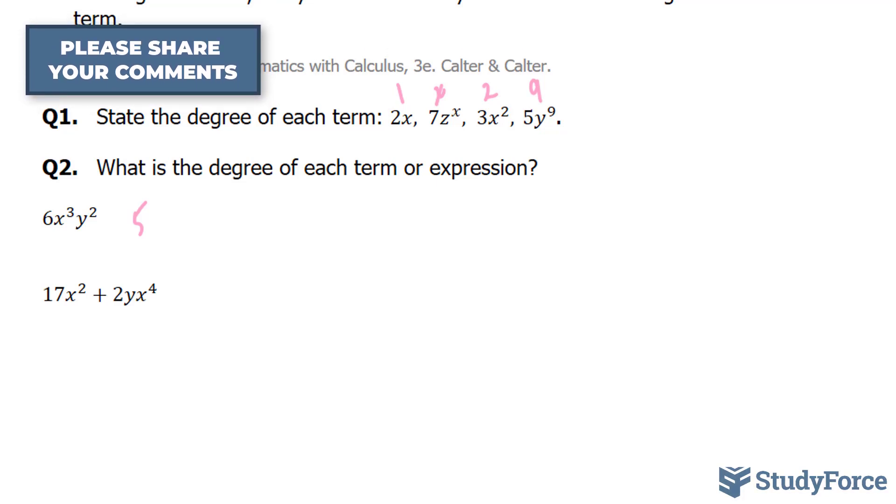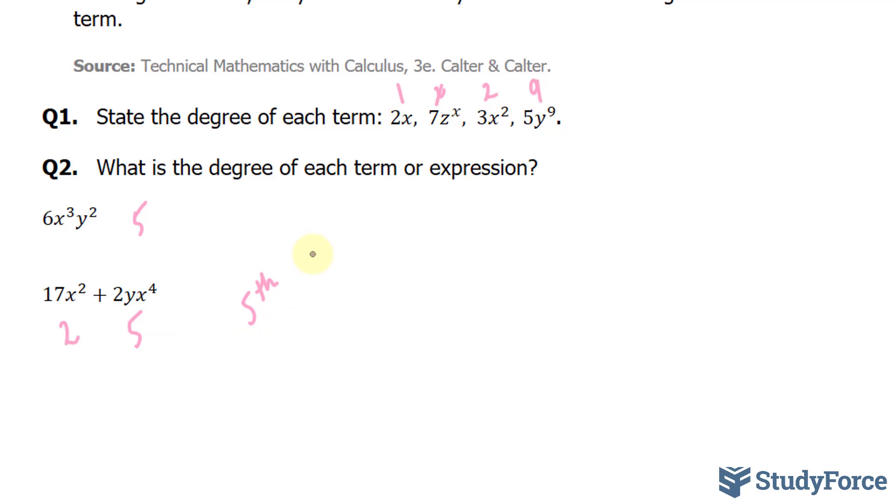To figure this one out, you have to find out the degree of each term. So we have 17x to the power of 2. The degree here is 2. And over here, the degree is 5. You don't add 2 and 5 together. Instead, you pick the highest one. So this is a fifth degree expression.